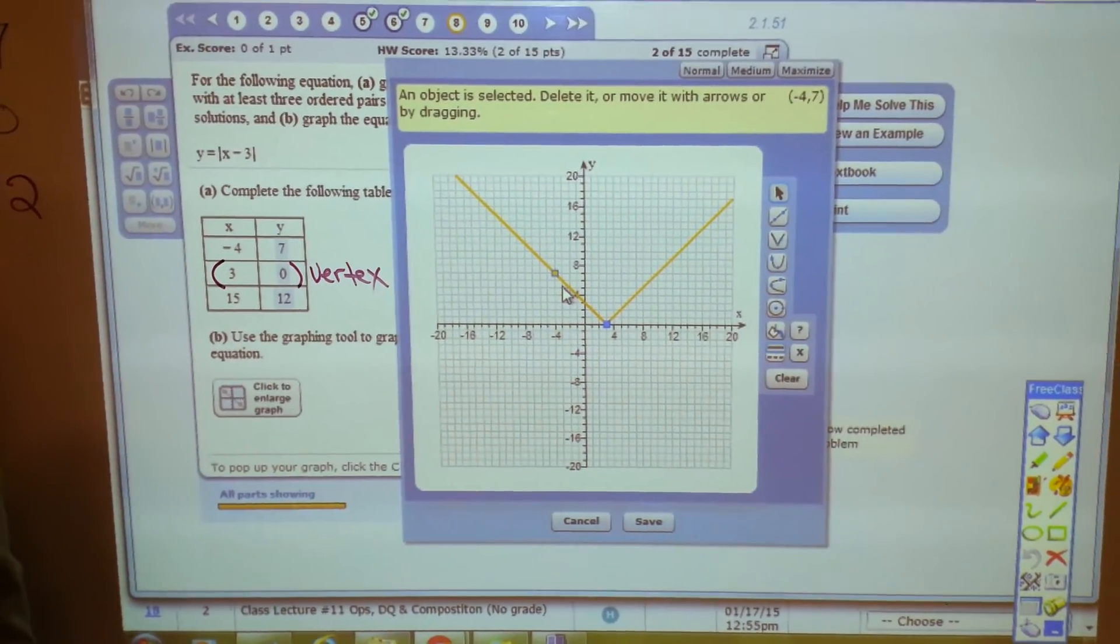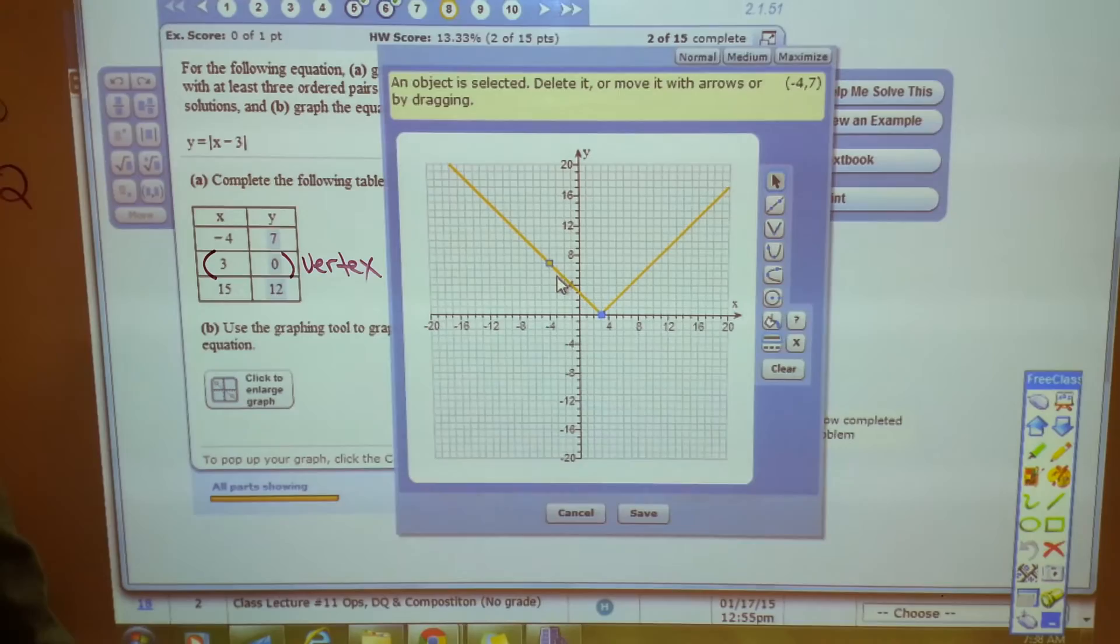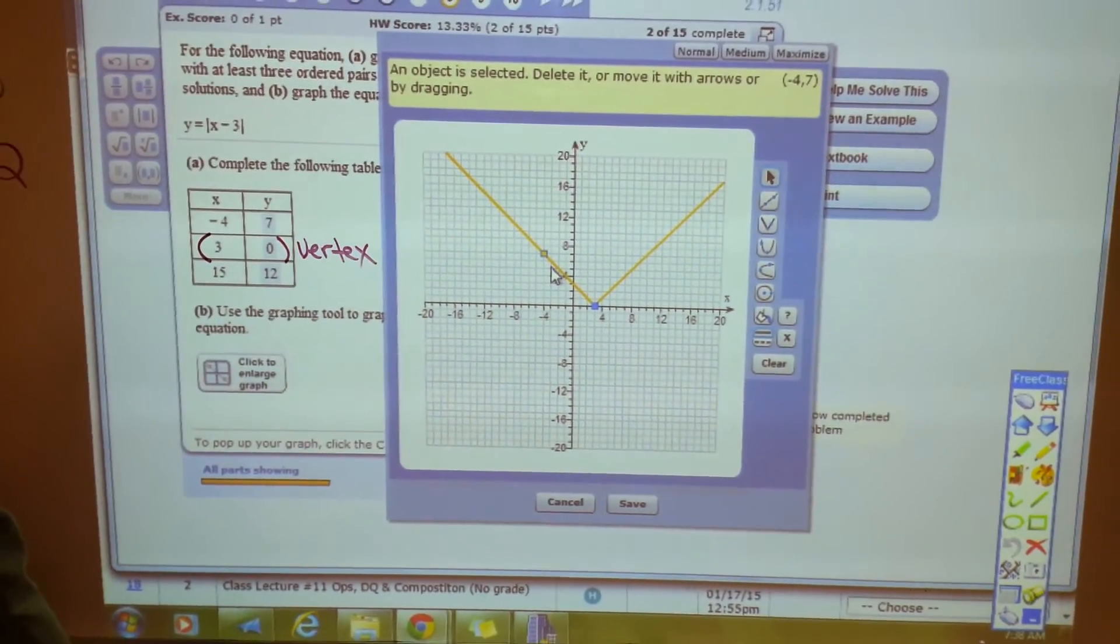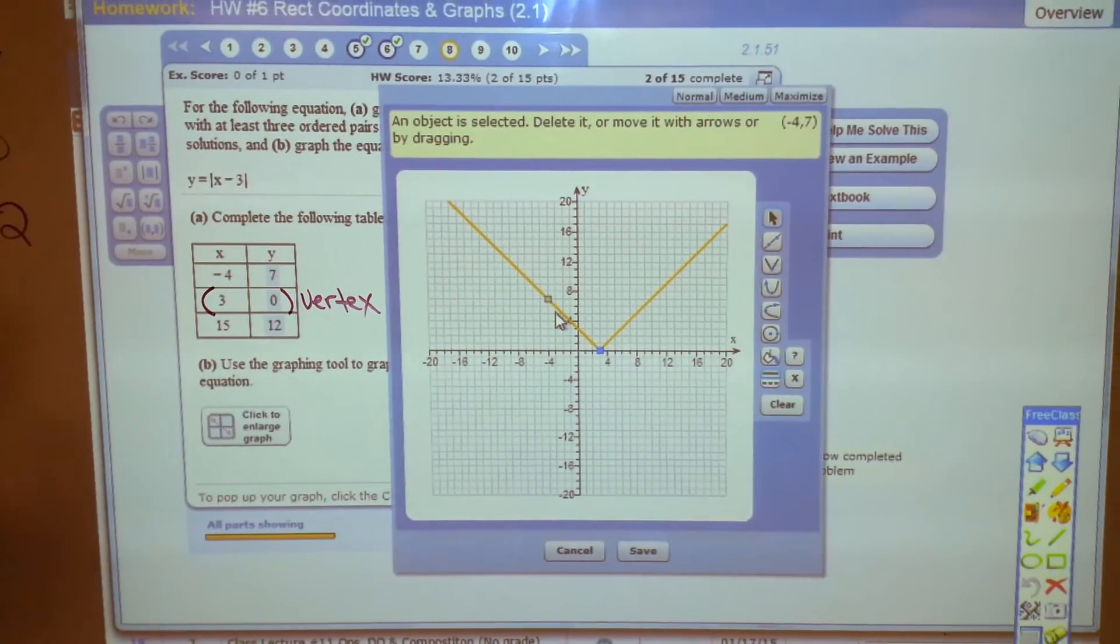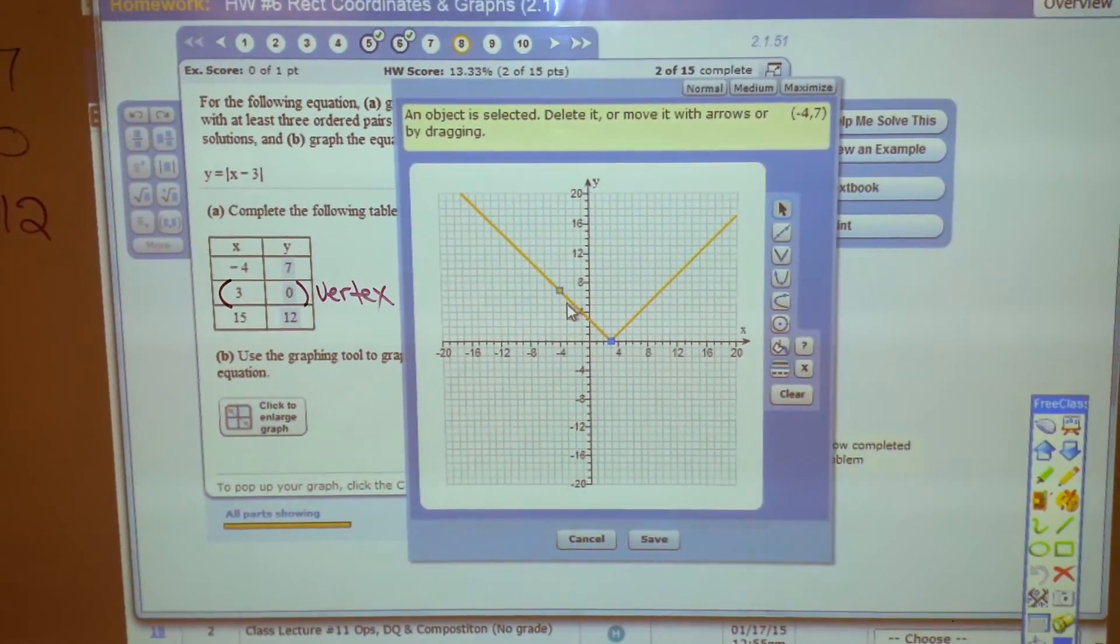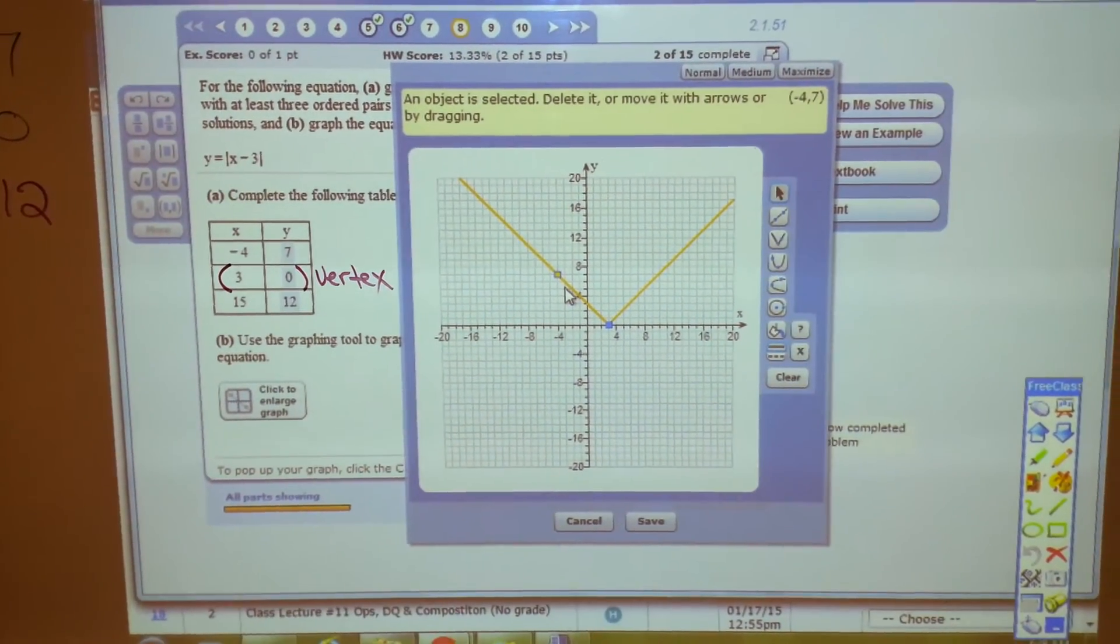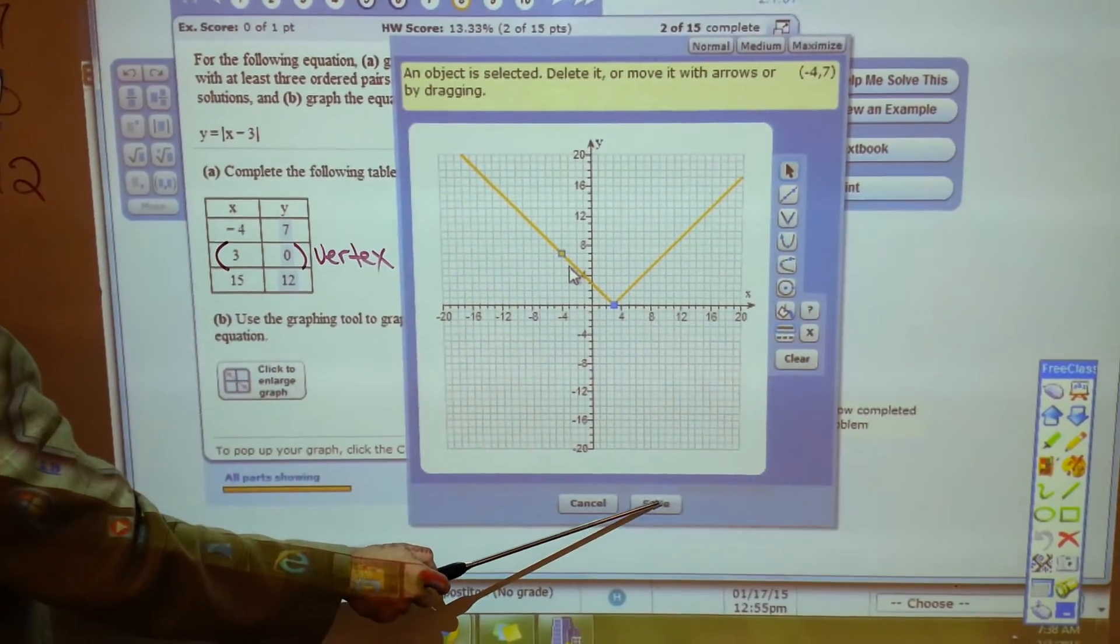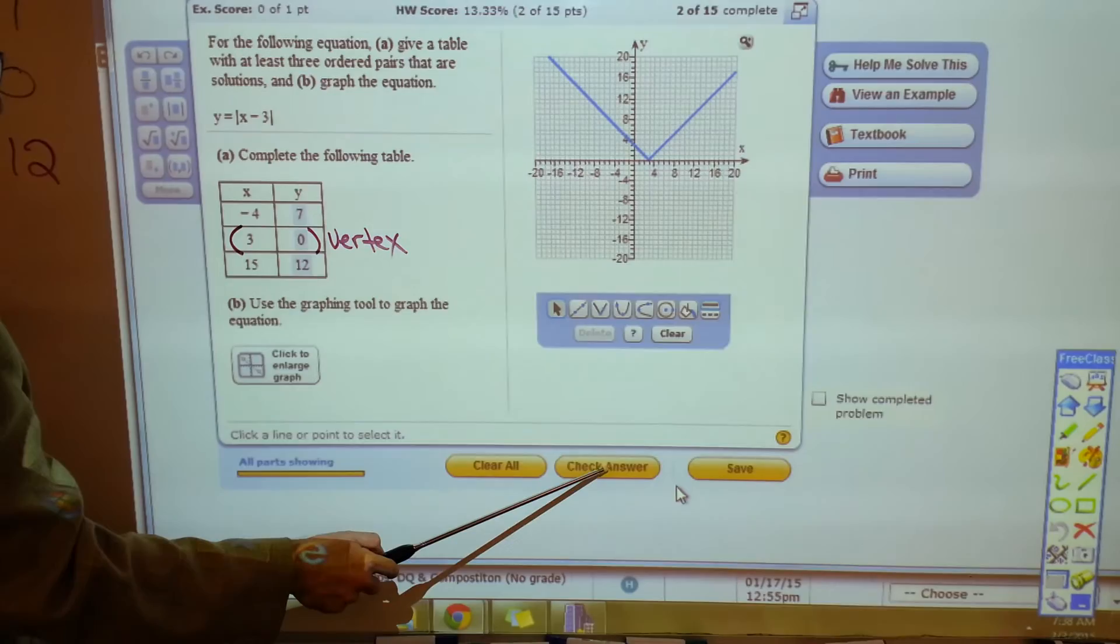So hopefully I won't get a million different emails, people asking me what's wrong with number eight. Because you don't plot all three of the points. The middle point and one other point. Save it. Check it.